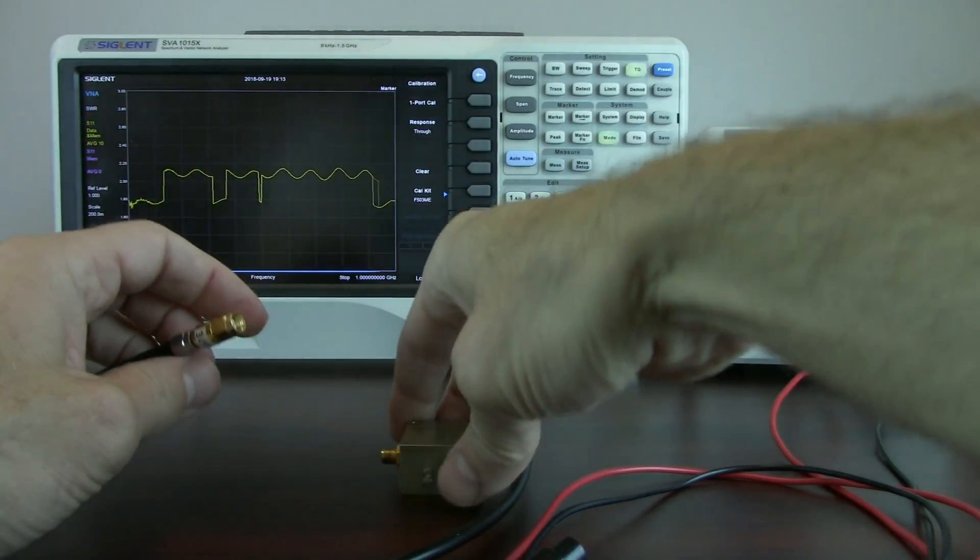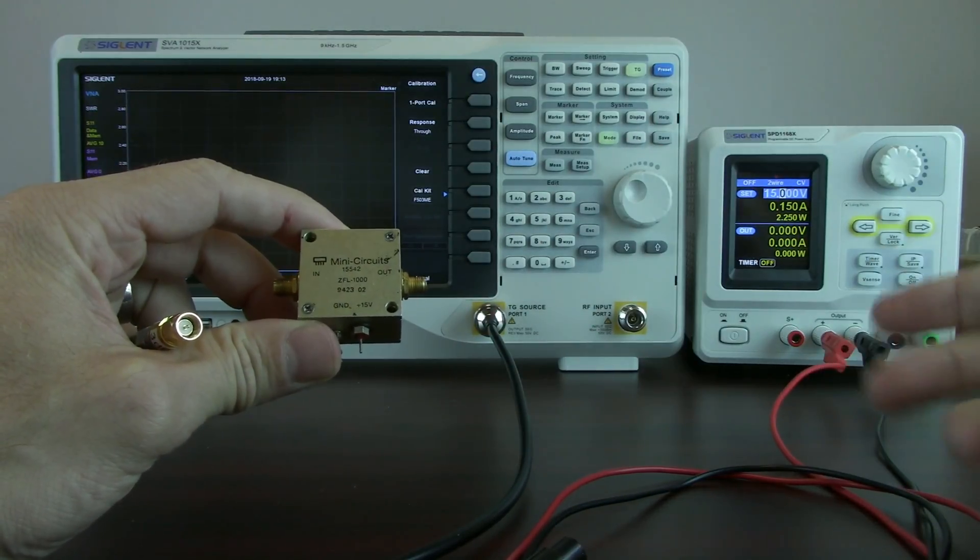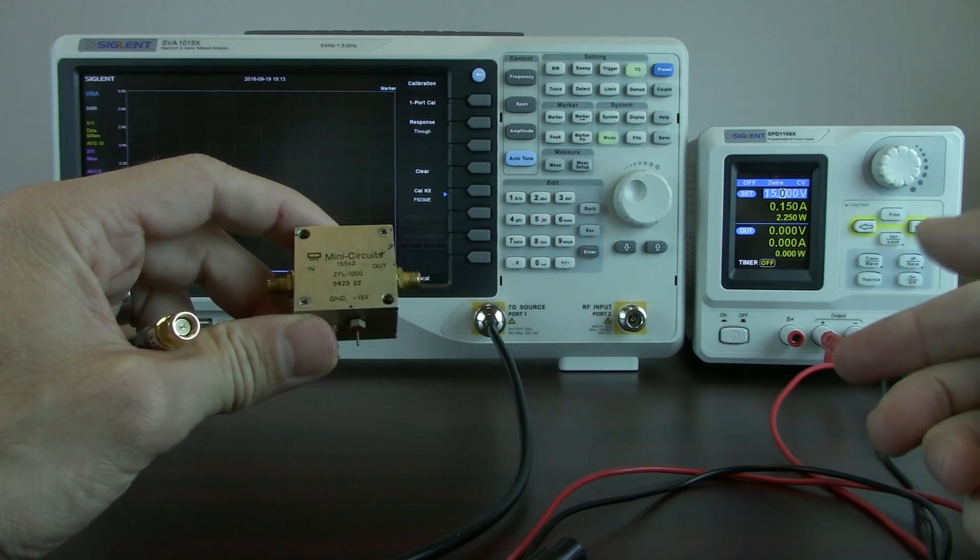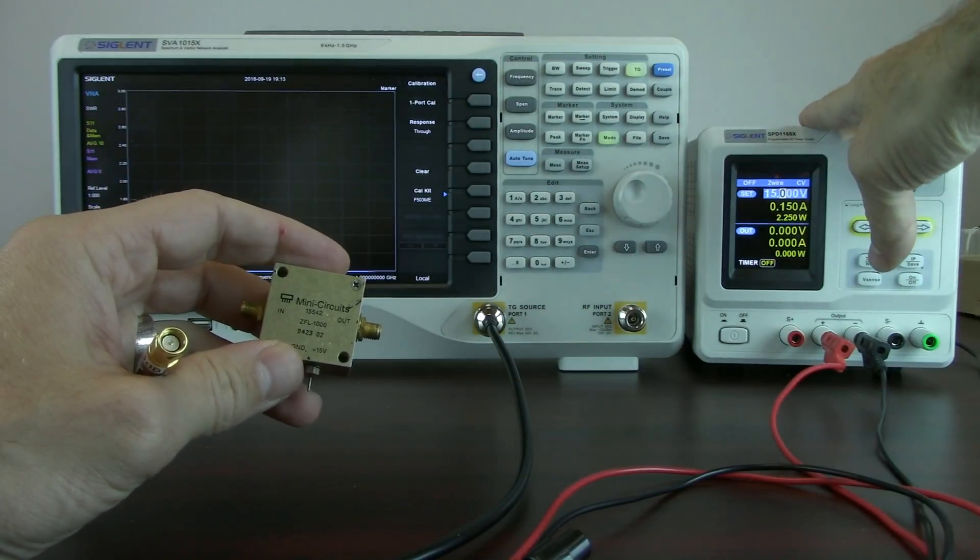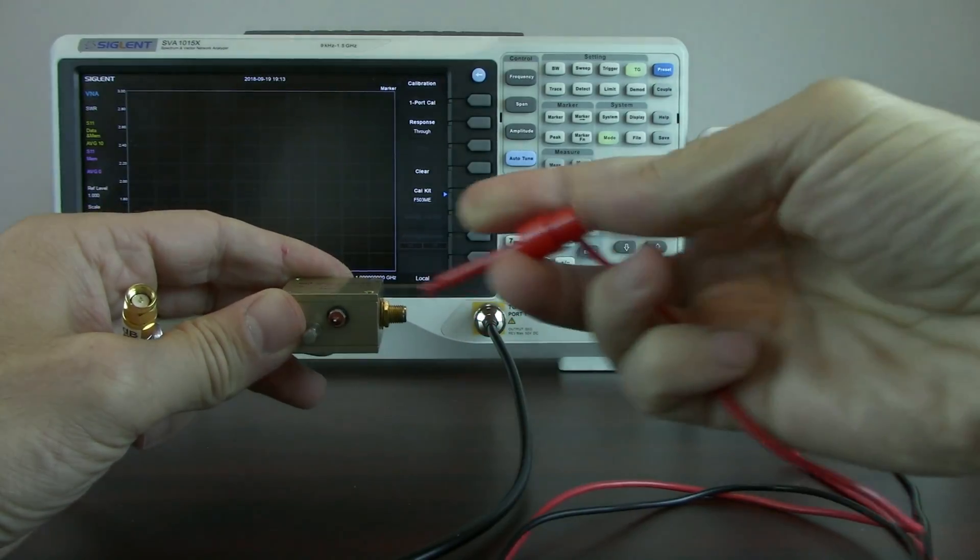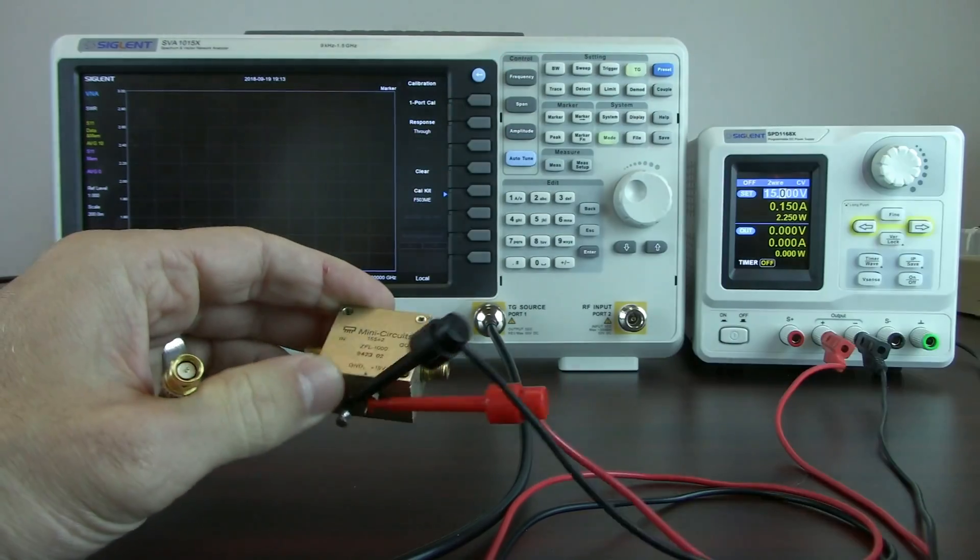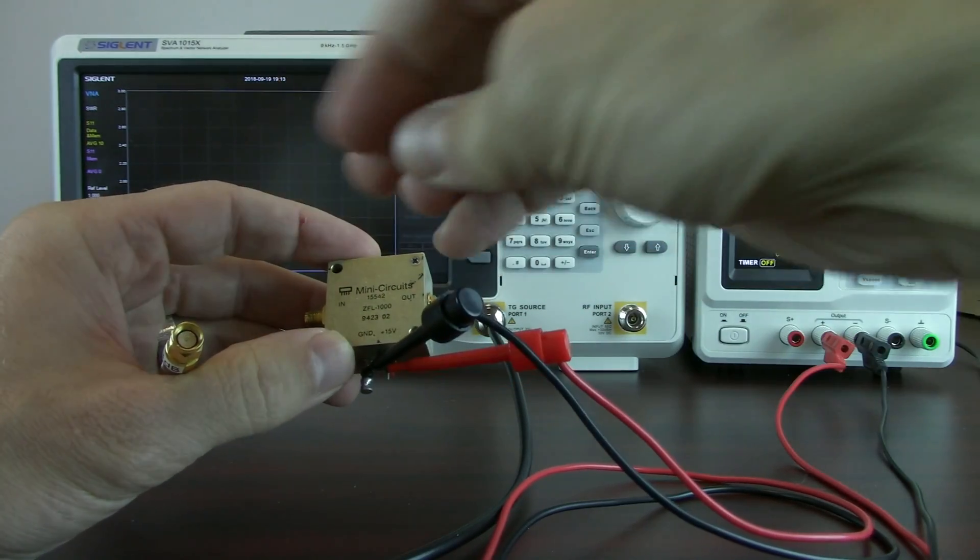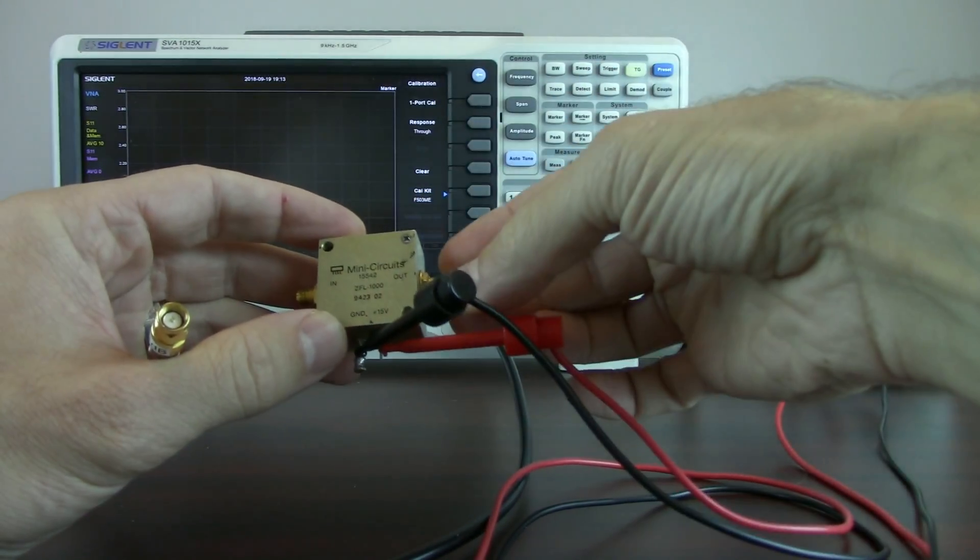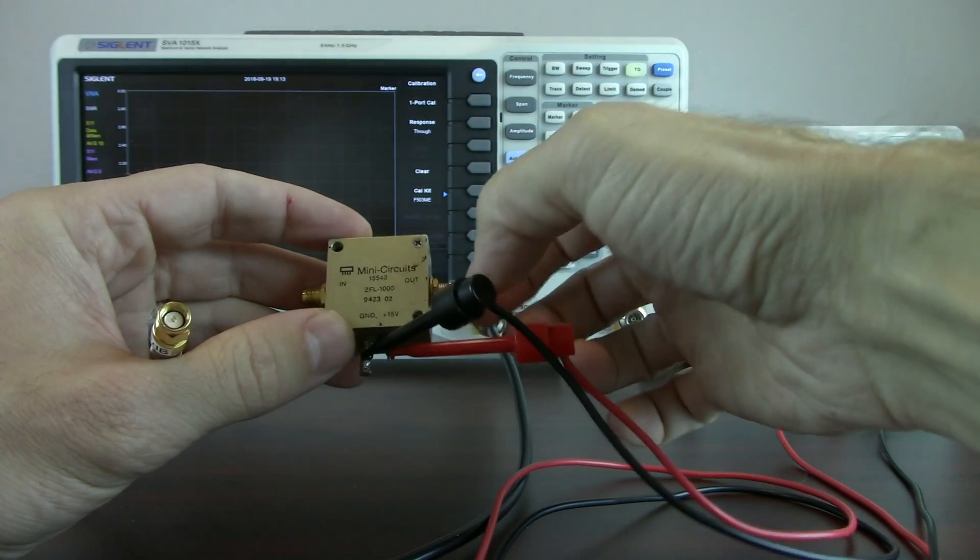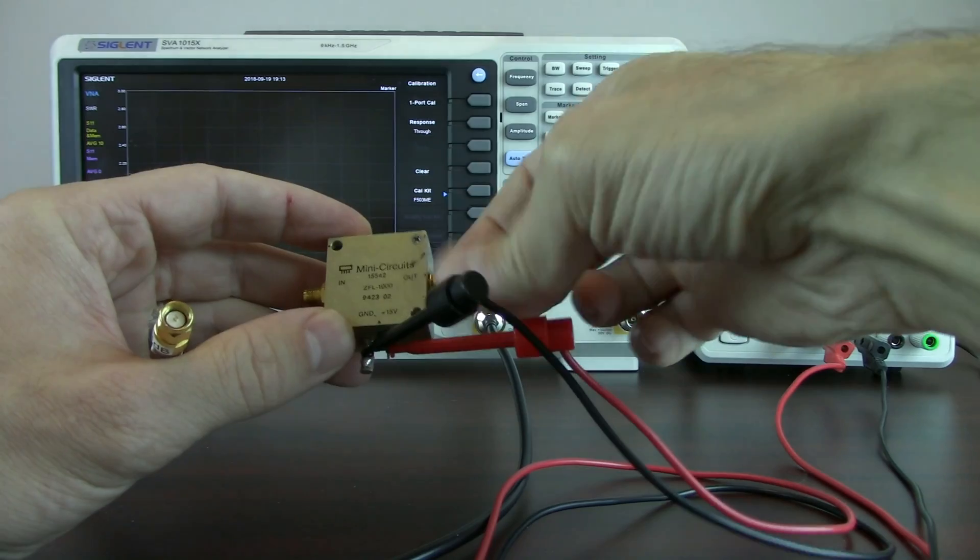This amplifier has an input and an output. And as you saw previously on the data sheet, we have a VSWR for the input as well as the output at 15 volts. So as you can see, I've got a power supply over here set for 15 volts. I'm going to connect up our positive and negative lead. And because I have an open port, I'm going to be doing a reflection measurement. I actually want to put a load termination on the output or the opposite side of the port so that it looks as if this is connected to a 50 ohm load.